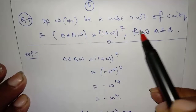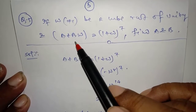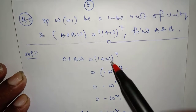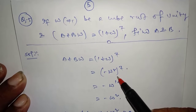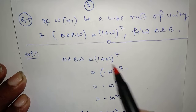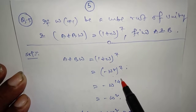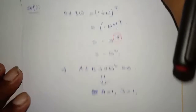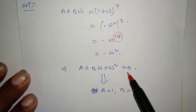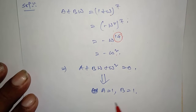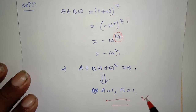If omega is not equal to 1, be a cube root of unity, and a plus b·omega equals (1 plus omega)^7, find a and b. Since 1 plus omega plus omega squared equals 0, the value of (1 plus omega) is minus omega squared, so we get minus omega to the power 14. Dividing 14 by 3 gives remainder 2, so this is omega squared. Transposing to the left: a plus b·omega plus omega squared equals 0. This equals zero when a and b are both equal to 1. So a equals 1 and b equals 1. This is very important PYQ.